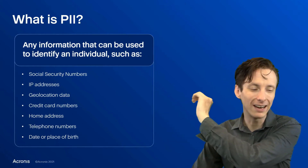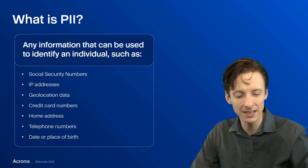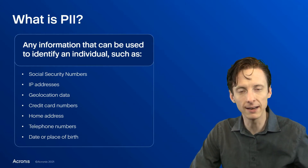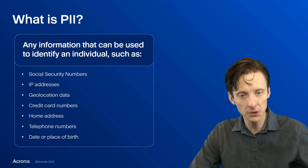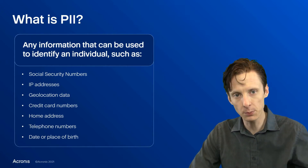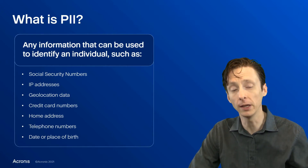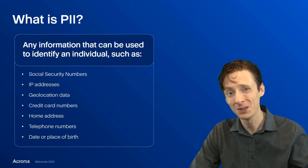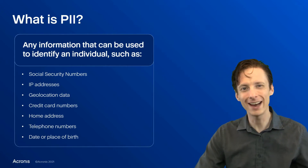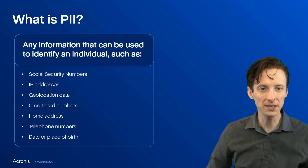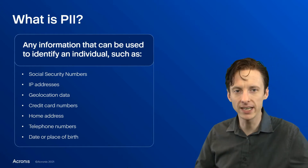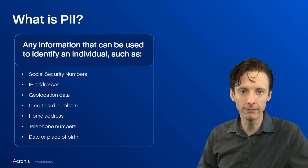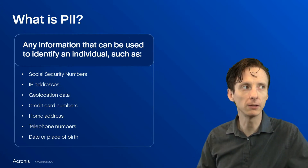So maybe a date of birth and an IP address is more than enough for us to say those correspond to this person and only this person. So that's kind of what PII is — it's just the data or enough data to identify someone uniquely.